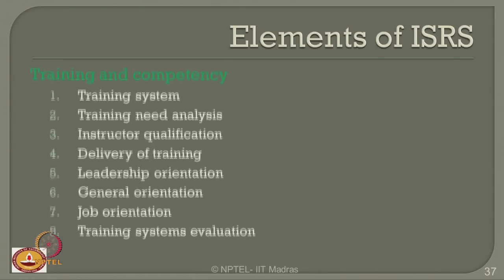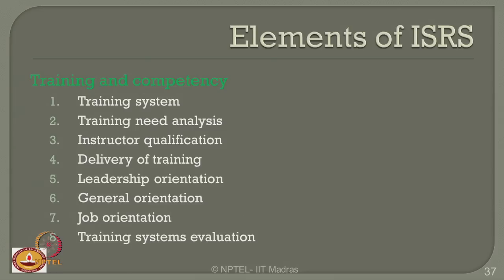The next ISRS element is training and competency: what training system is in place, what training needs analysis has been done, what qualifications are specified for instructors, timing of training delivery, leadership orientation for employees, general orientation within the work culture, job orientation for employees, and training system evaluation to rank training professionals.